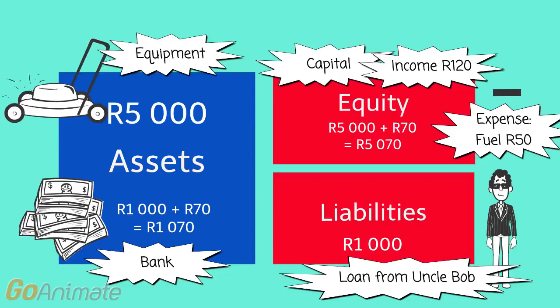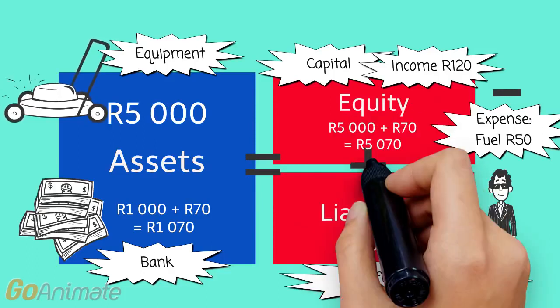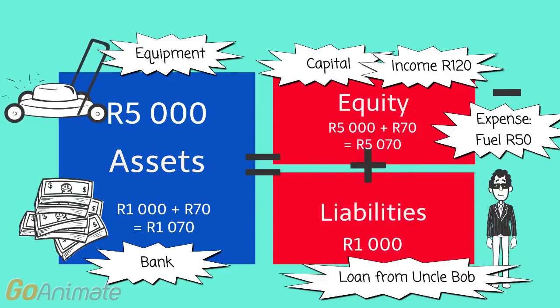So you see her assets are 5,000 plus 1,070, which is 6,070. And this is equal to her equity invested in the business of 5,070, plus the loan from Uncle Bob of 1,000.